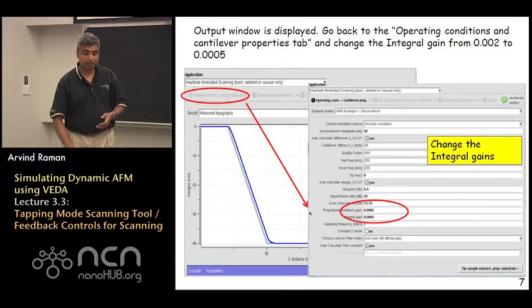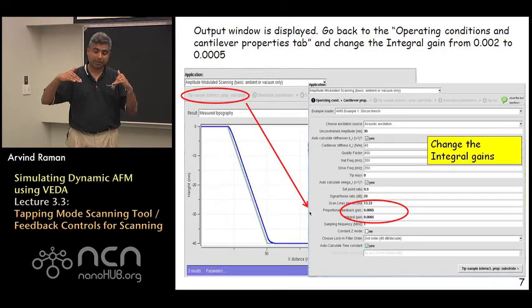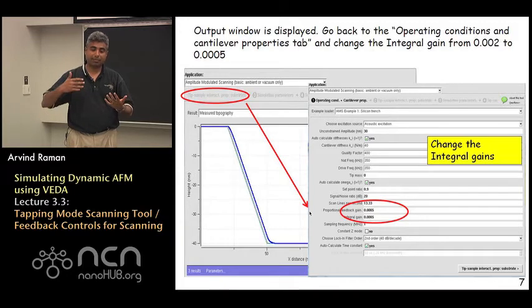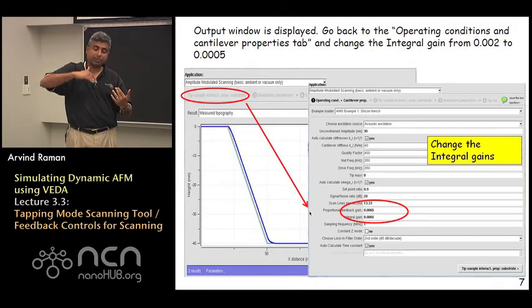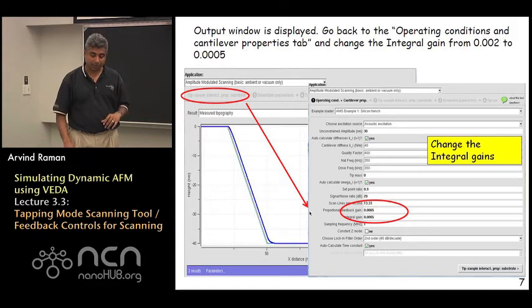Keep in mind that the actual topography is always going to be slightly different from the measured topography by an AFM because all it is doing is moving the base of the lever up and down to keep the amplitude constant.